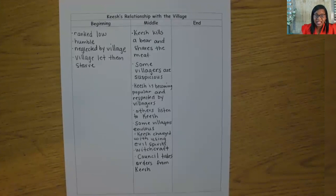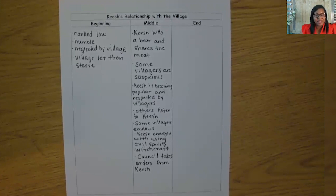Quiche was accused of using witchcraft, but he said it was headcraft. What does he mean by that? Quiche means that he used his head — his brains — to create a plan to kill the bear. Now, how did Quiche kill the bear? He used balls of fat filled with a sharpened whale bone. When the bear would eat it, it would rip his insides open, making him easier to kill.